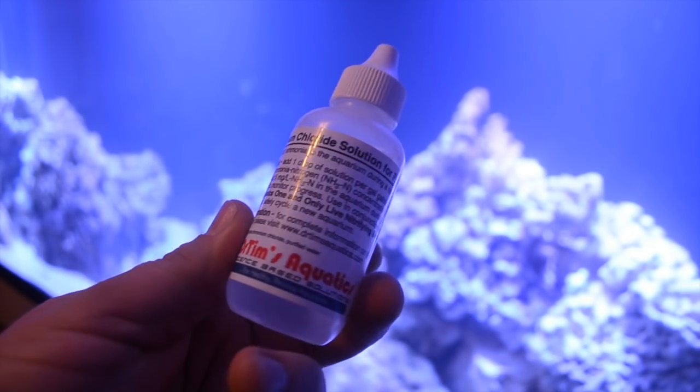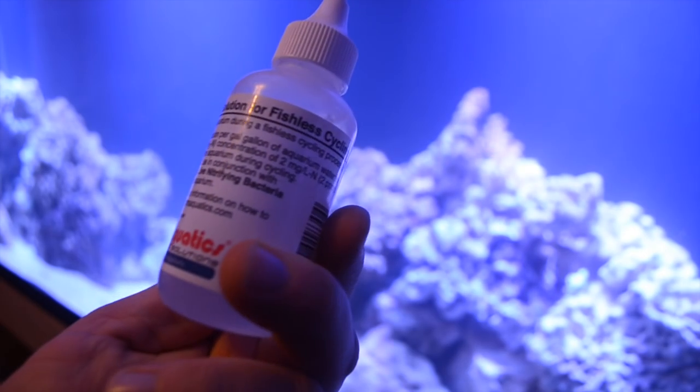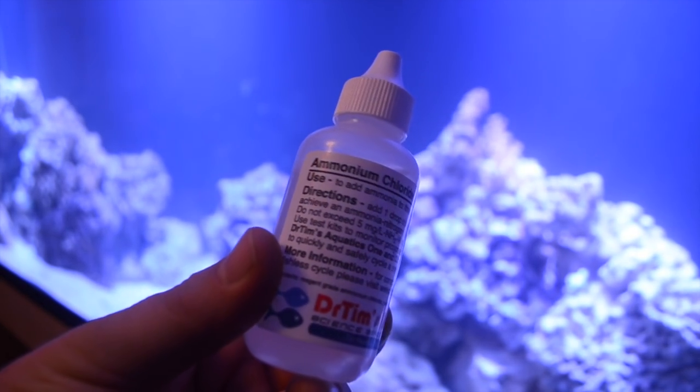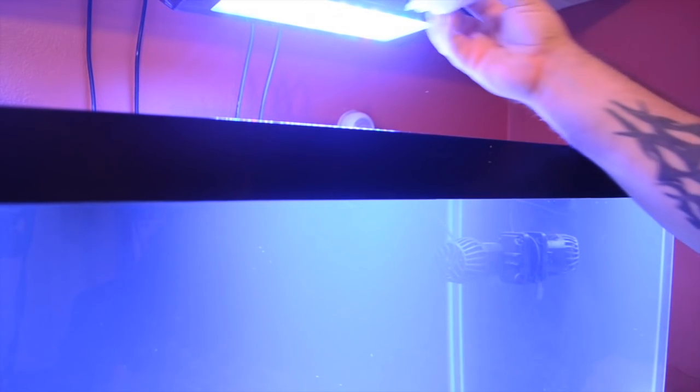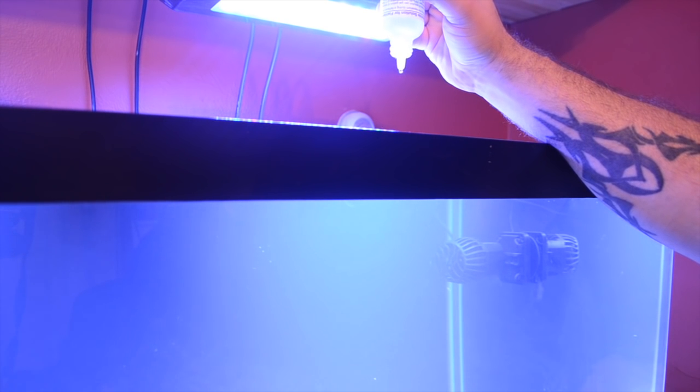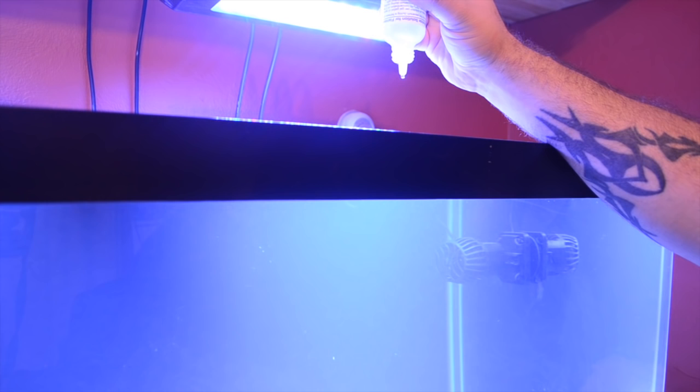Now you can't just add the Dr. Tim's Aquatics One and Only to the aquarium - you have to give the bacteria some type of food. The food that this bacteria needs to consume is ammonium chloride. When you purchase your bottle of One and Only, Dr. Tim's Aquatics will actually give you a bottle of ammonium absolutely free. One bottle will last you a long time - I've probably used maybe a fourth of the bottle that I have here in this video, and I've cycled over three to four hundred gallons of aquariums with it.